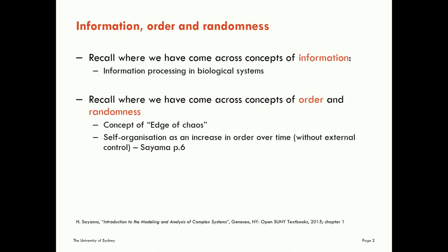We talked about self-organisation being defined as an increase in order over time, in particular without external control — you can read more about that in Siyama's excellent text. Similarly, we talked about emergence as an increase in order over scale. In both cases we talked about these concepts and how they increase, but we didn't really talk about how to measure them. Later on we're going to look at using information theory as our way of measuring the structure in complex systems and a way to define these concepts.